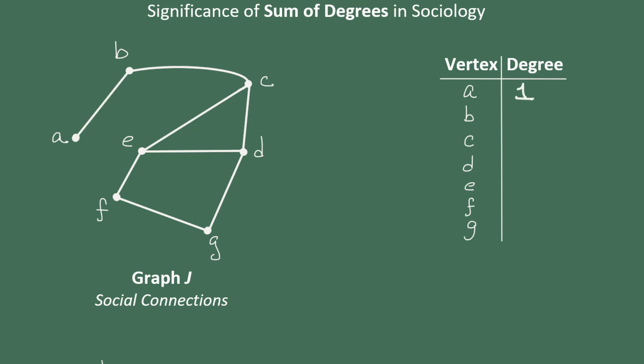Vertex B is in contact with two edges, the one leading to A and the one leading to C, so it has degree two. C has degree three. D also has degree three. E also has degree three. F has degree two, and G has degree two.